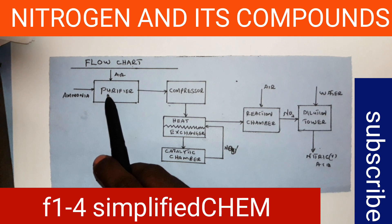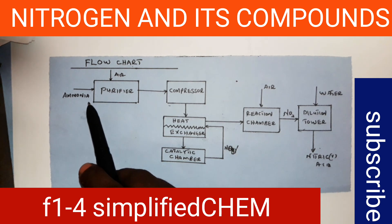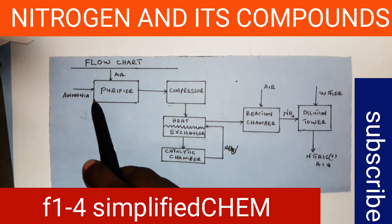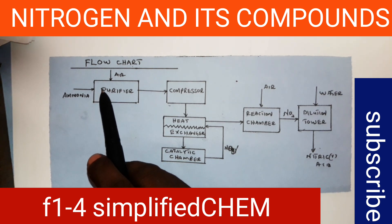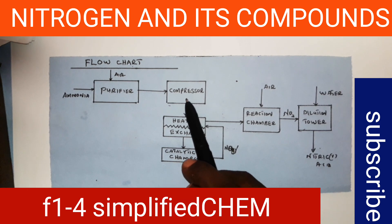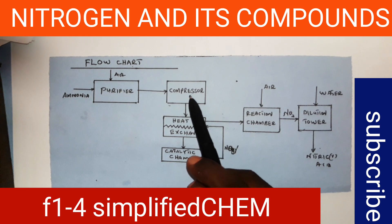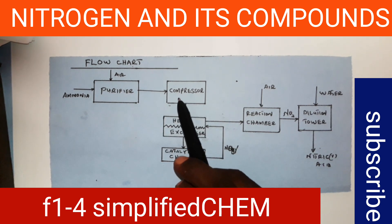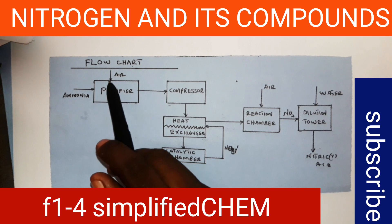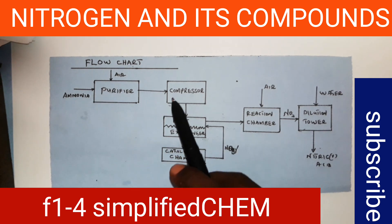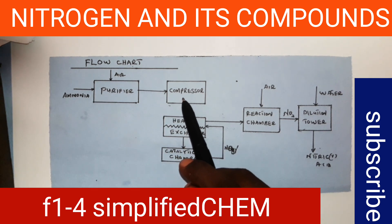After the mixture has been purified, it is pumped into the compressor. Because the pressure required is 9 atm, the compressor will reduce the volume of the ammonia and air, hence increasing the pressure to about 9 atm.